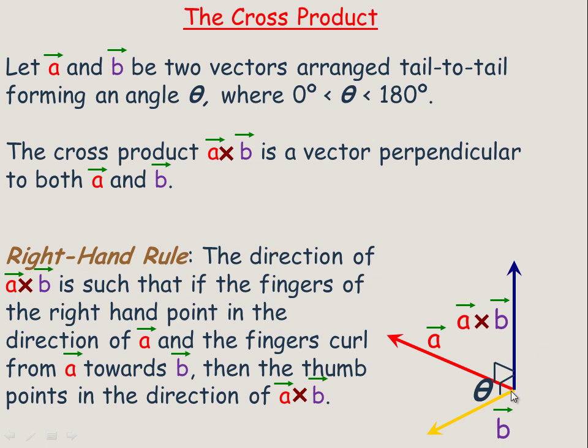Now the right hand rule: there's actually two directions that the perpendicular vector could be. The right hand rule says if you put your right hand so that your fingers point in the direction of the first vector and curl towards the second, then the thumb points in the direction of the cross product vector. So if it's a cross b, the fingers point from a, the first vector, and curl towards the second vector.